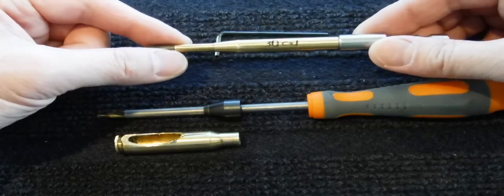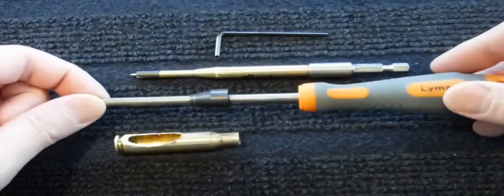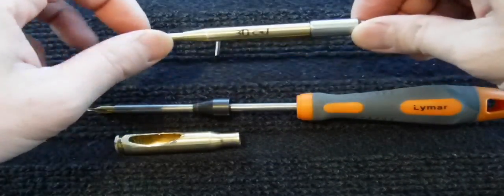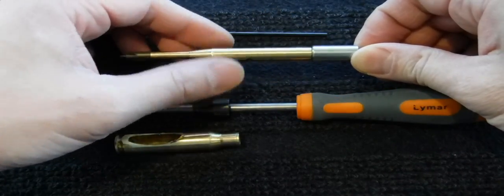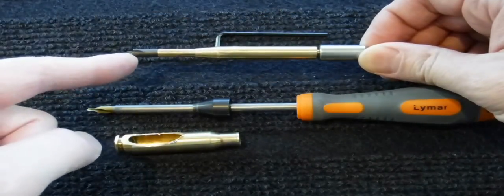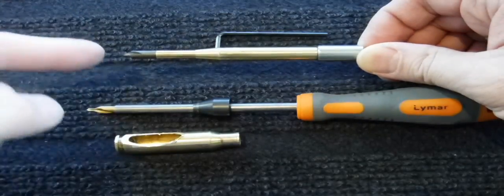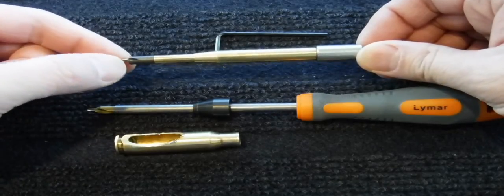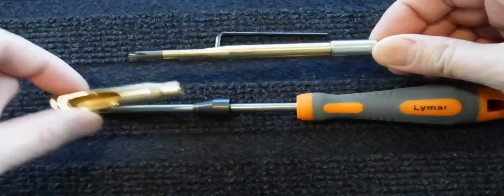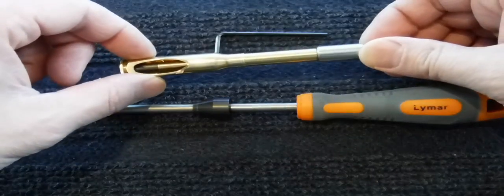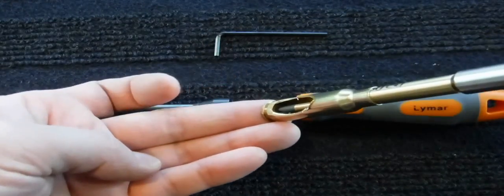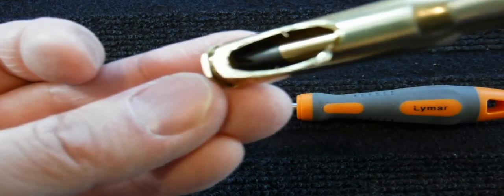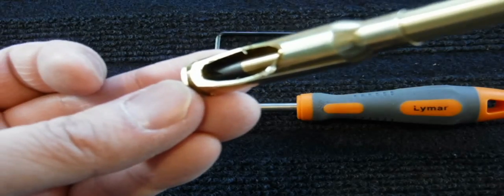How this differs from the Lyman flash hole deburring tool is that it has a bushing which rotates and the way it indexes is off the bottom of the case. So technically once you hit the bottom of the case using this tool and it enters the flash hole there, I'll try to zoom in, it bottoms off of the case and stops removing any additional material.